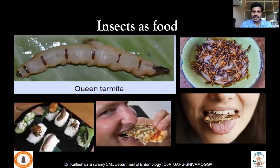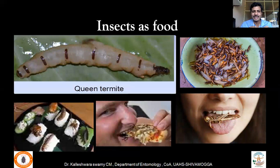Since time immemorial, insects have been used as food. Indians have consumed queen termites and winged termites. In many foreign countries, cockroach and grasshopper factories exist, producing them in enormous numbers as an important dietary component. The United Nations now supports research on insects as food in order to help eliminate hunger in the world.